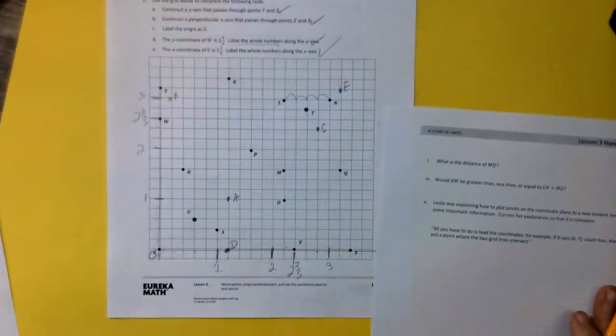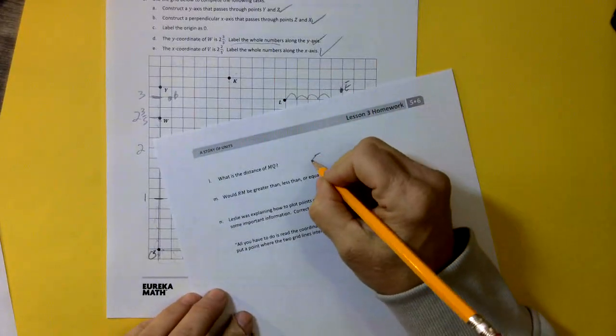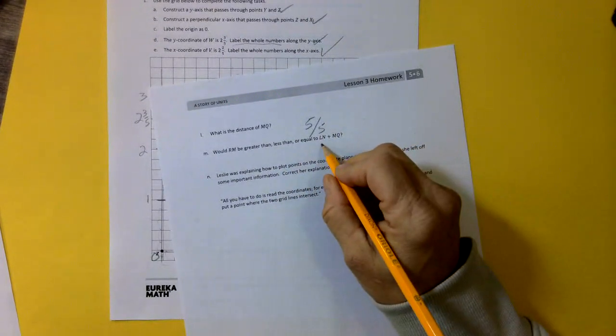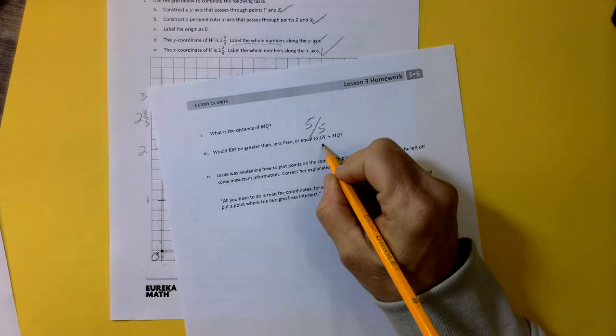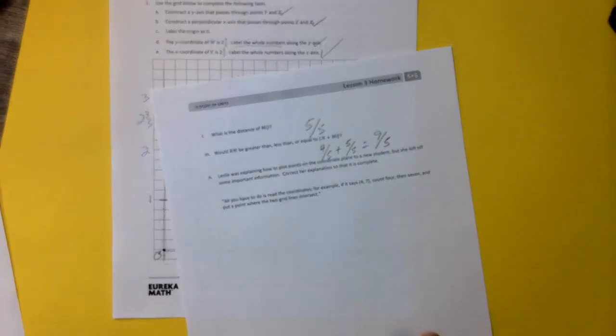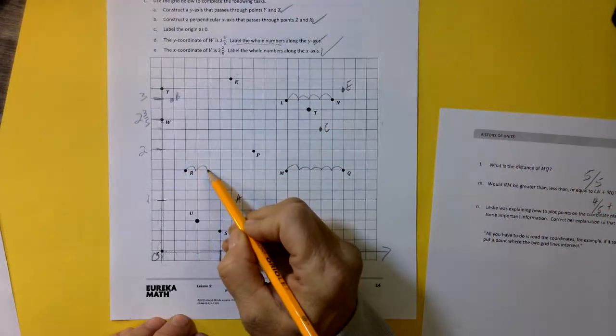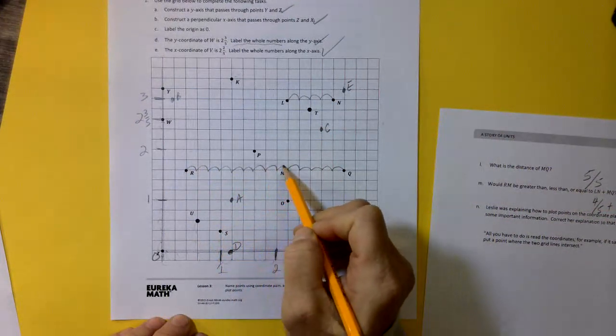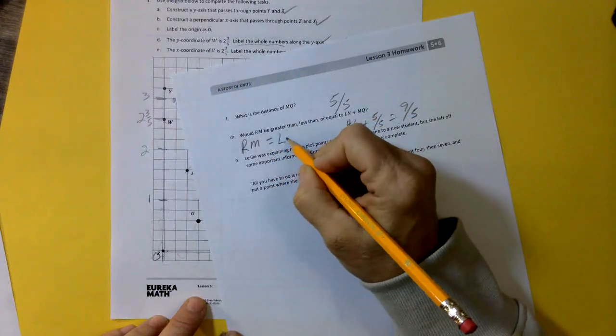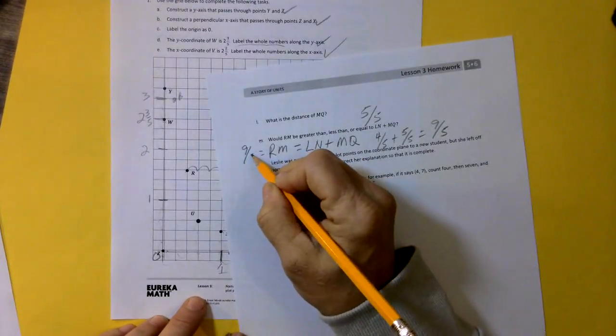What is the distance of MQ? Well, where's MQ? Oh, here we are. 1, 2, 3, 4, 5 fifths. Right? So we just count 5 fifths. So would R M be greater, less than, or equal to L N plus MQ? Well, we know L N is 4 fifths. And we know MQ is 5 fifths. So that is 9 fifths altogether. Let's go see what R M is. Here's M and here's R. 1 fifth, 2 fifths, 3 fifths, 4 fifths, 5, 6, 7, 8 fifths, 9 fifths. So we're going to write R M is equal to L N plus MQ. Right? Because we know R M is equal to 9 fifths as well.